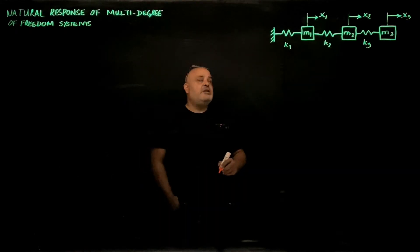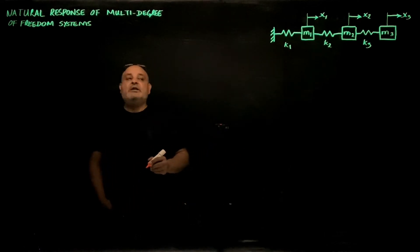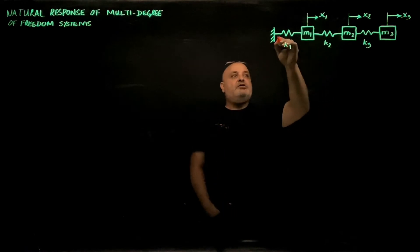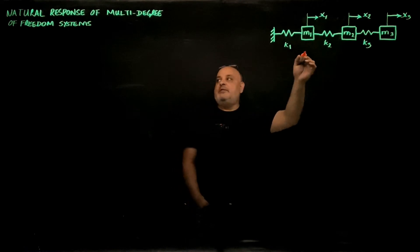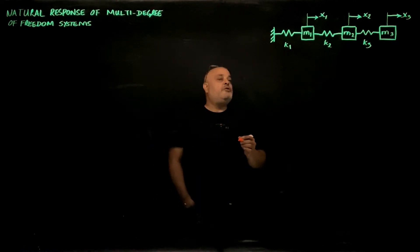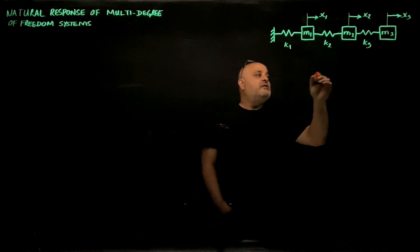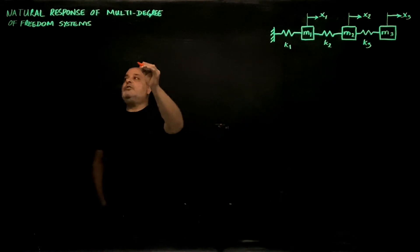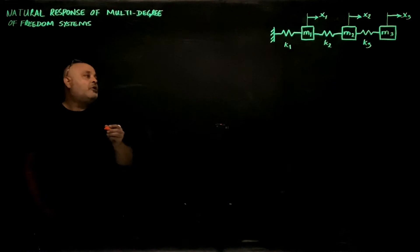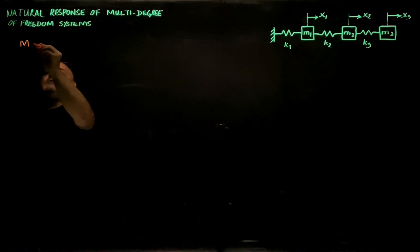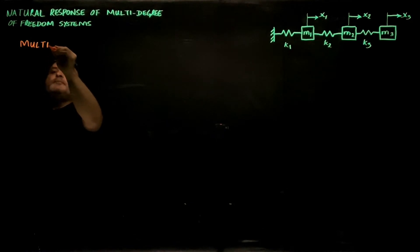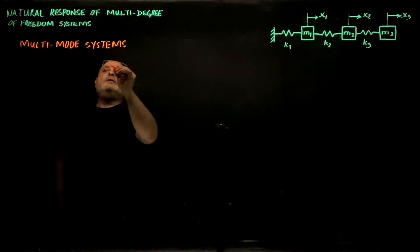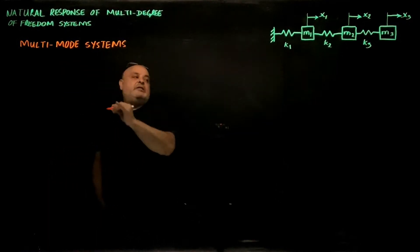Let's discuss the natural response of a multi-degree-of-freedom system, such as the system shown here. We have three masses connected by springs attached to a fixed support, giving us three degrees of freedom. Such a system is known as a multi-degree-of-freedom system, or more commonly known as a multi-mode system.